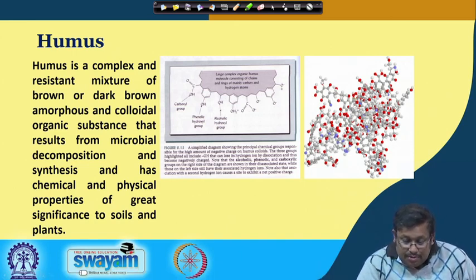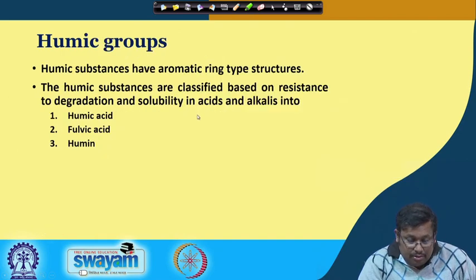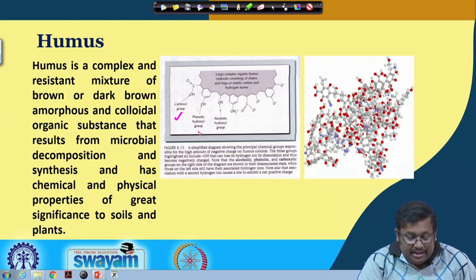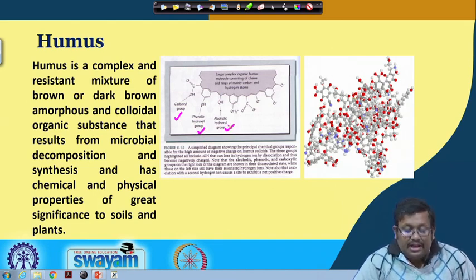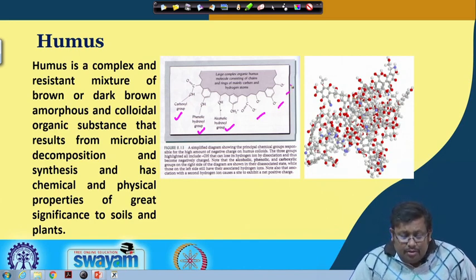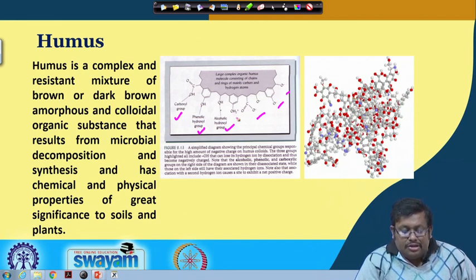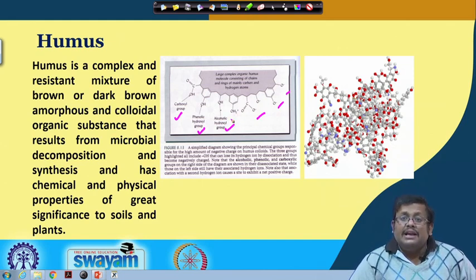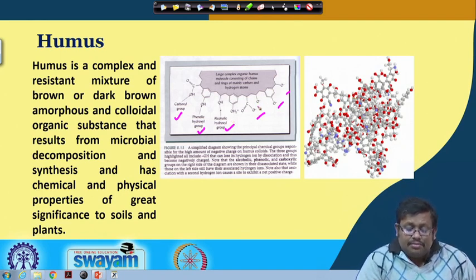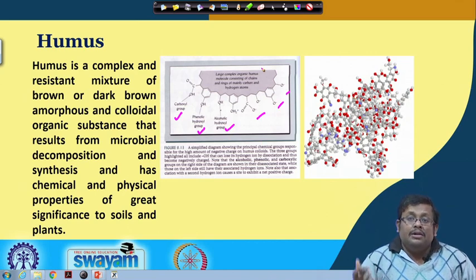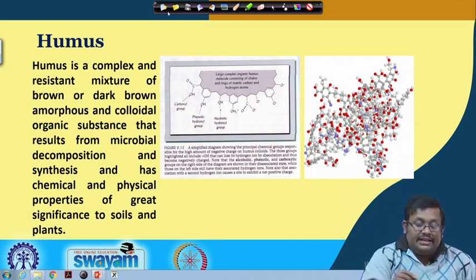Another simplified diagram shows the principal chemical groups responsible for the high amount of negative charge on humus colloids. The CEC of humus is a couple of folds higher than that of clay. The three groups are the carboxylic group, phenolic hydroxyl group, and alcoholic hydroxyl group. These dissociated forms are negatively charged and as a result attract positively charged cations, and also some positively charged groups can attract anions, which is why humus can absorb a large amount of plant nutrients for maintaining soil fertility.